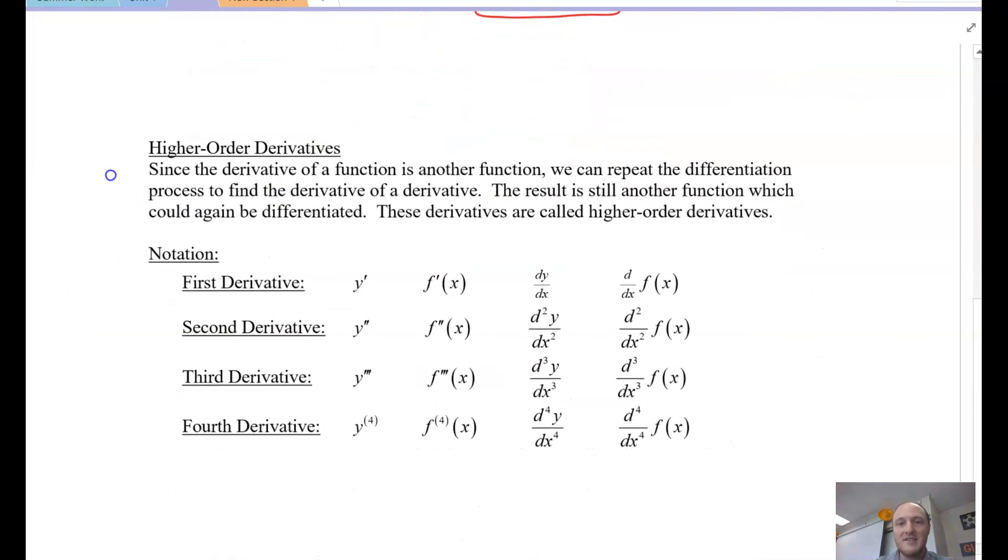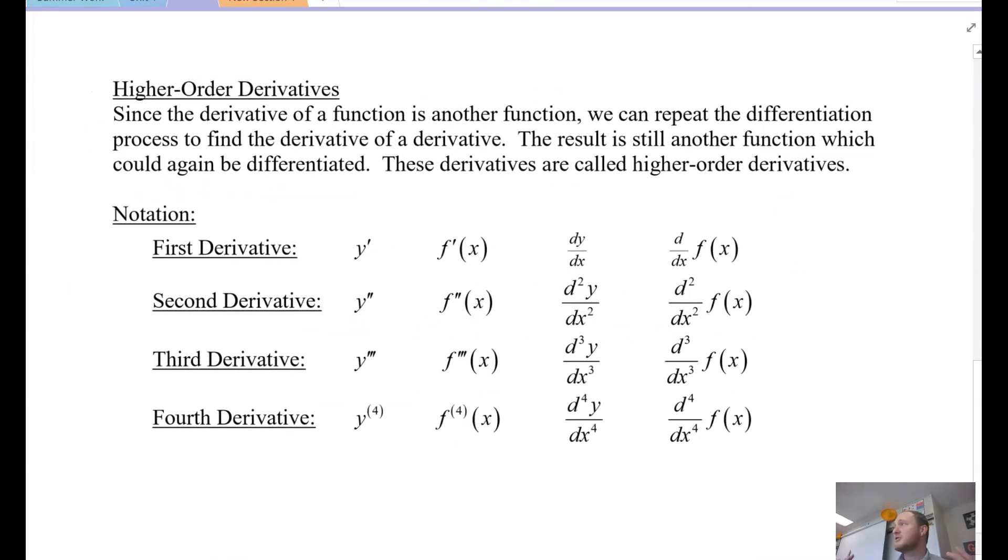Now, the power rule is so easy, we can easily take multiple derivatives. What? There's a derivative of a derivative? Yes. And we call it the second derivative. What do you think you take a derivative of the second derivative is called? Third derivative. You're so smart. And the fourth derivative would be the derivative of the third derivative. You see? It's very easy. So let's introduce you to this idea. Higher order derivatives. Muy importante. My favorite Spanish phrase. It just feels good. Since the derivative of a function is another function, we can repeat differentiation process to find the derivative of a derivative. Higher order derivatives. The result is another function which could be, again, differentiated.